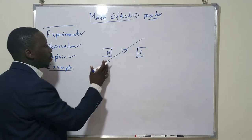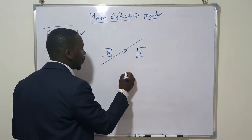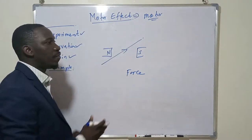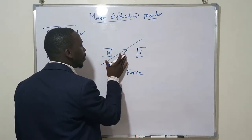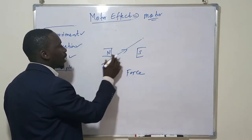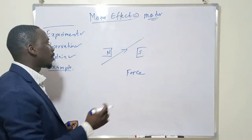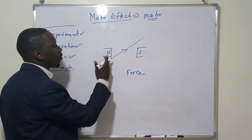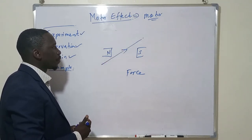The motor effect: when a conductor is put in a magnetic field, it experiences a force. In other words, it is able to move within the magnetic field, just as you saw in the demonstration. When a current-carrying conductor is placed within the magnetic field, it experiences a force which makes the conductor move, depending on the strength of the magnetic field or the size of the current flowing through the conductor.